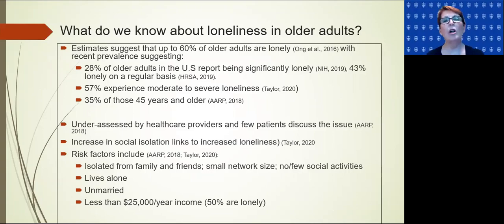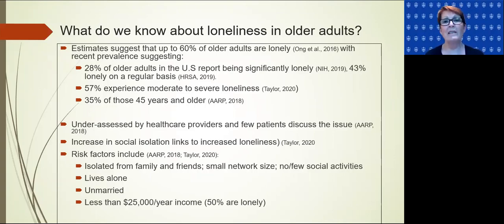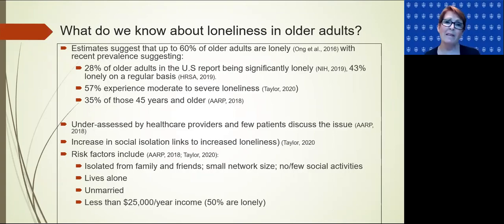Prevalence is kind of all over the place. There are a number of different prevalence studies, ranging from 28% up to about 60%, and it depends on who you ask, when you ask, and what age range — particularly among older adults. We do know that loneliness and social isolation tend to be extremely under-assessed by healthcare and social service providers, and are not usually part of the intake or patient assessment process.